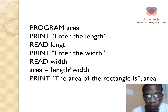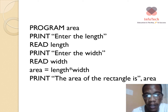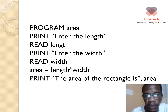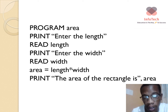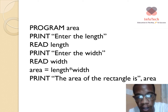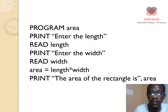Finally, we print the result: 'The area of the rectangle is' followed by the variable area. Whatever value is stored in the variable area will be printed on the screen along with that message. For example, the output would read: 'The area of the rectangle is 50'.